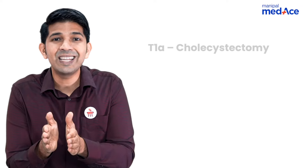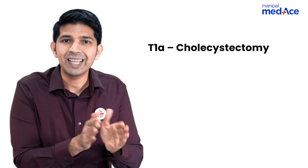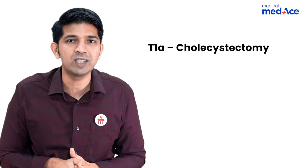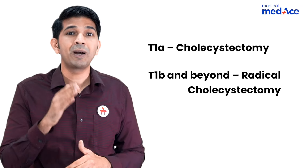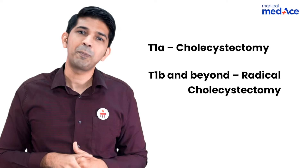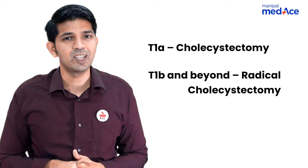If the gallbladder is sent for histopathology and it turns out to be cancer: if it is T1A, then a simple cholecystectomy — what you've already done — is sufficient. But if it is T1B and beyond, the patient needs a radical cholecystectomy.